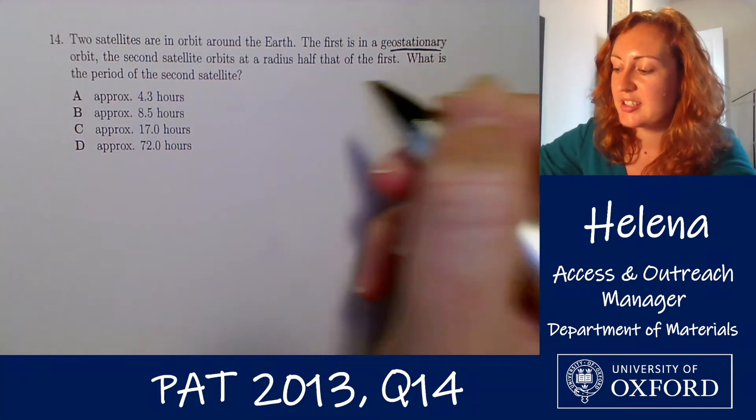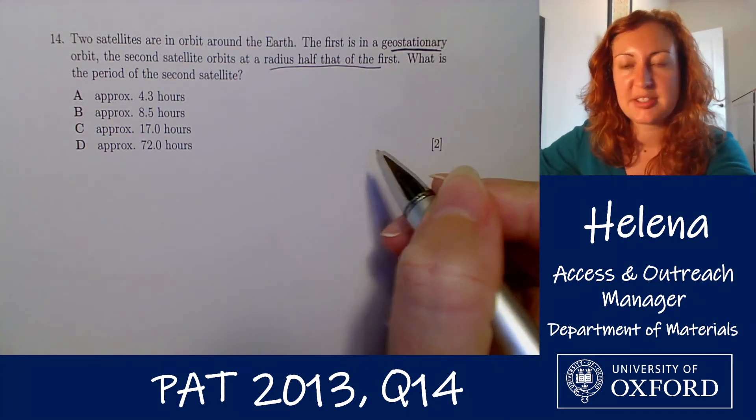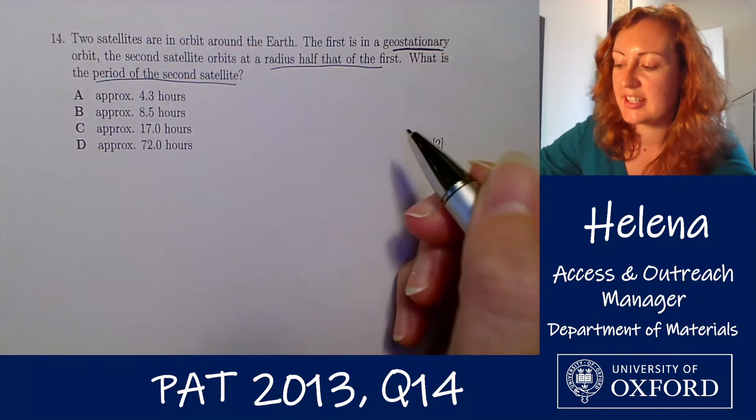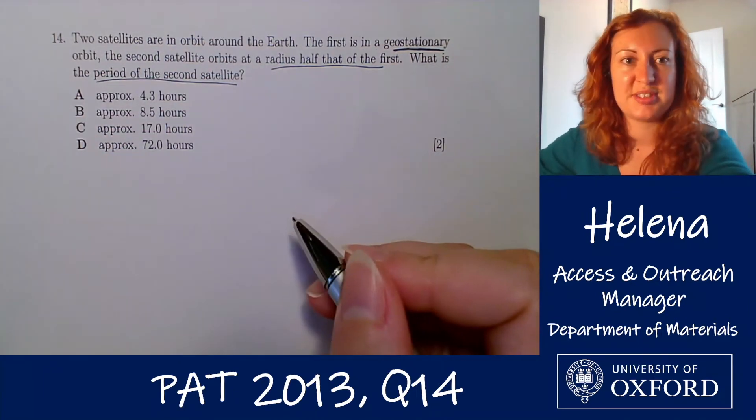The second satellite orbits at a radius half that of the first and we're being asked to find the period of the second satellite. Okay and these are the four options we have to choose from.